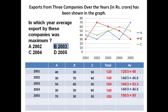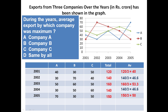Now using the same graph, one more question can be answered: during these years, the average export by which company was maximum? 5 years data is there for company A, company B, and company C. So which company's export was maximum during these 5 years?